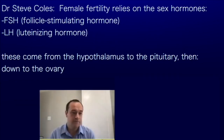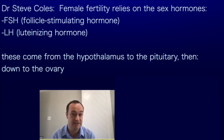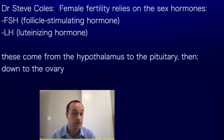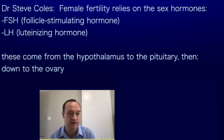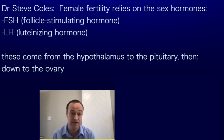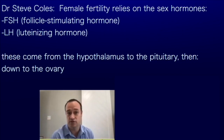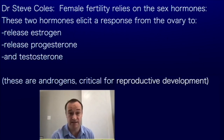Female fertility really relies a lot on the female sex hormones, particularly FSH and LH — follicle stimulating hormone and luteinizing hormone. Those come from the hypothalamus to the pituitary, then down to the ovary. That's an axis that's really important in reproductive health, and all of those are relevant in this situation and in every woman.